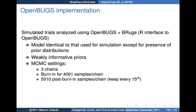For the OpenBUGS implementation — though I used OpenBUGS, the WinBUGS implementation would be identical in terms of the model. We analyzed this using OpenBUGS. The link to R used BRugs instead of R2WinBUGS. The model was identical to that used for simulation, except we introduced prior distributions — we stuck with very weakly informative priors. For MCMC we used three chains, burn-in of just over 4,000, and 5,010 post-burn-in samples per chain.